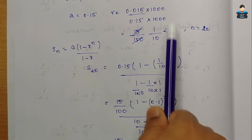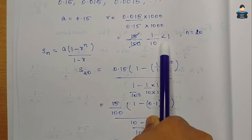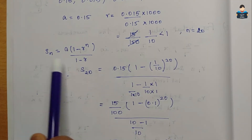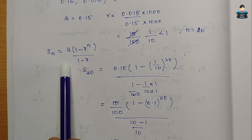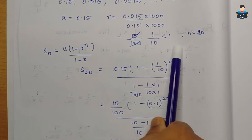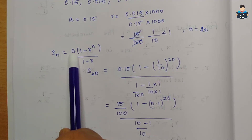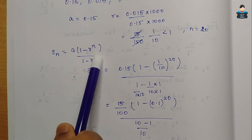Note: when the common ratio is less than 1 we use the formula with (1 − r^n)/(1 − r). When r is greater than 1, we interchange and use (r^n − 1)/(r − 1).